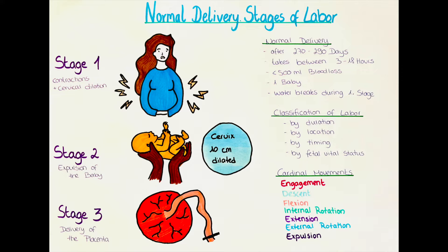Labor dystocia can occur in different phases of the delivery. Labor can also be classified by the location it takes place in — either in a hospital, at home, or spontaneously somewhere unplanned. Labor can also be classified by how far along the pregnancy it occurs: as labor on term between the 37th and 42nd week, pre-term labor before that, or post-term labor after that.